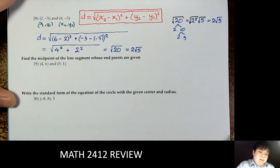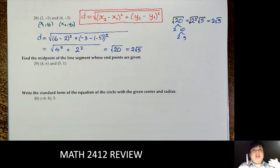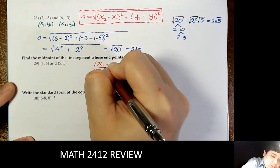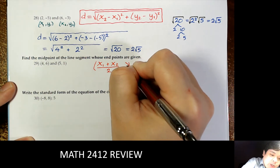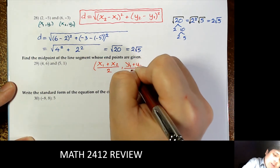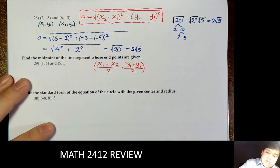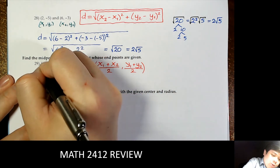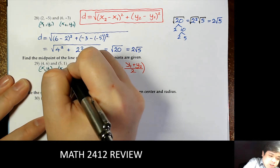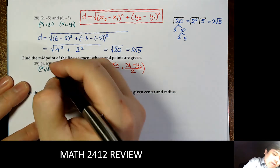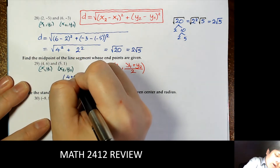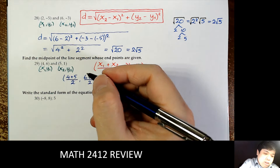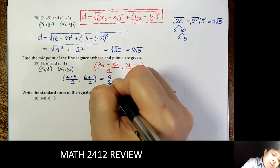Now the midpoint. The midpoint is the point in the middle — the average of the x values and the average of the y values. We can use either point as (x1, y1) and the other as (x2, y2). We get 4 plus 5 divided by 2, and 6 plus 1 divided by 2, giving 9/2 and 7/2.